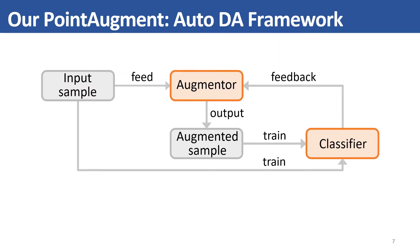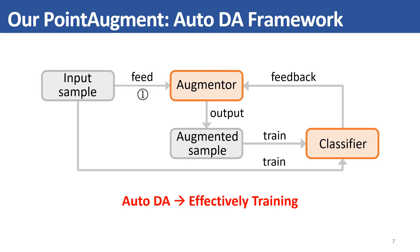Here, we introduce our framework PointAugment, which automatically optimizes the augmentation of input point cloud samples for more effectively training the classification network. Our framework contains two networks: an augmenter and a classifier. Given an input sample, we first feed it into our augmenter to produce an augmented sample, then feed both the input and augmented samples separately to train the classifier. We further take the result of the classifier as feedback to update the augmenter.